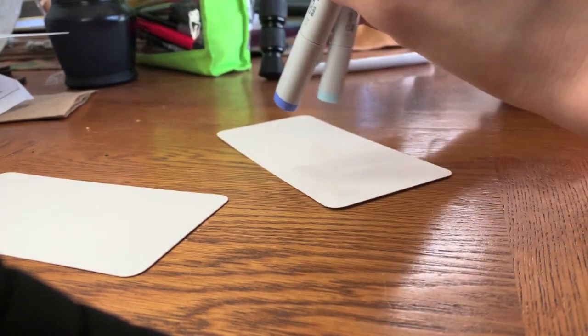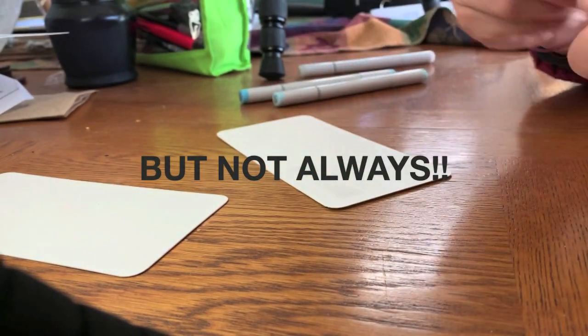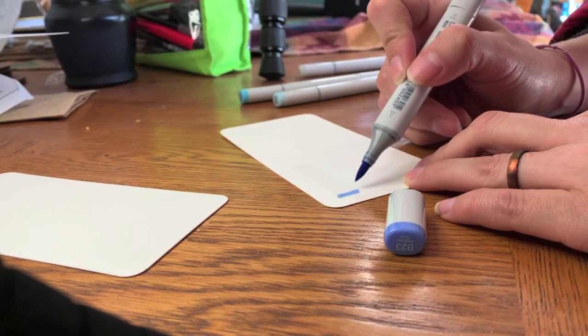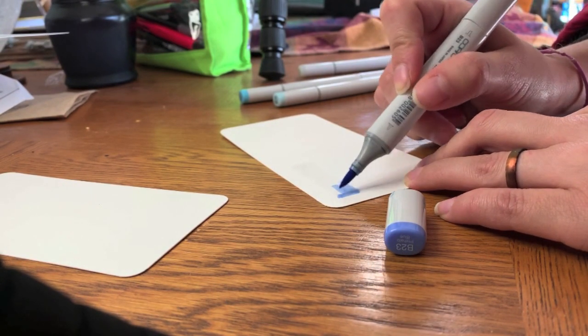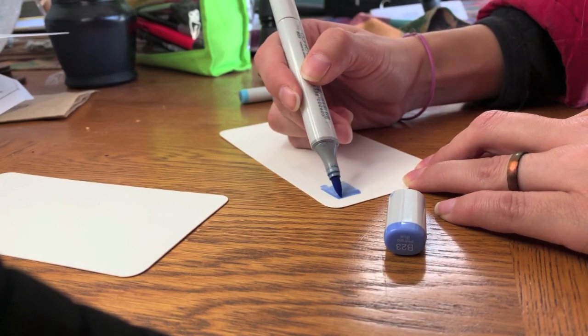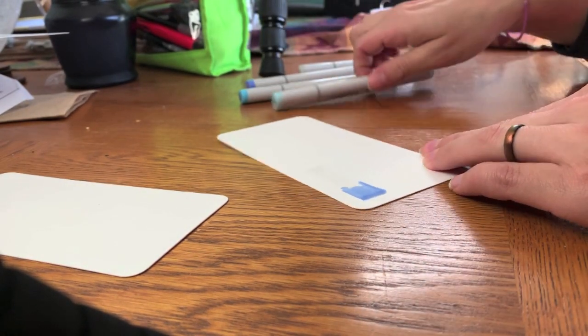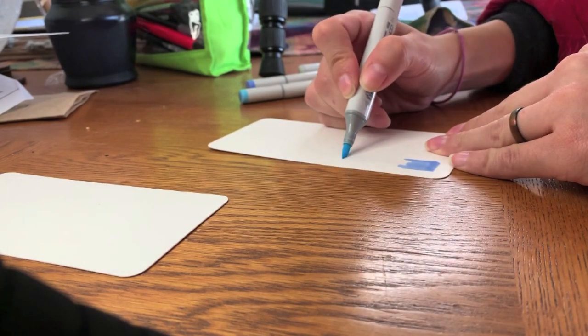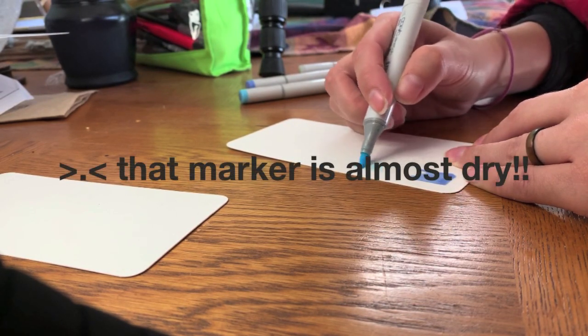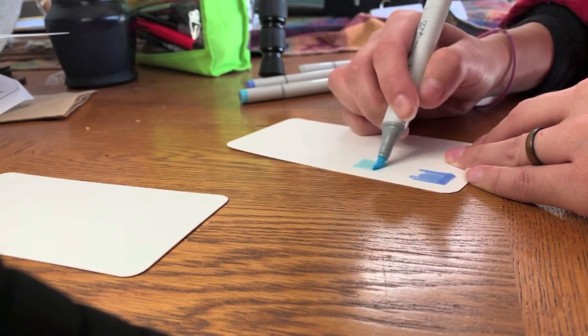I like to start with the darkest shade, which usually is the higher number, and I'll dot it. And if you can see that it spreads a little, because of the colorless blender underneath, it has a little bit of a feathering effect. So now fill the beginning portion. And then I will take the lightest color and fill the end.